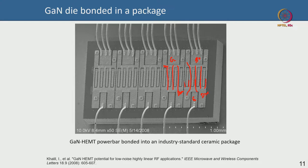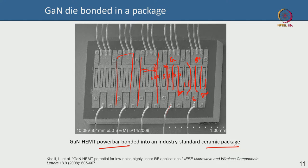This is a power bar — five power cells combined with wire bonding into a ceramic package. There are different package types: QFN, air-cavity, and ceramic packages. This one is in a ceramic package, wire bonded, probably not a very high frequency application. Once you put the GaN die in a package, you can hand it to a designer who can use the provided device characteristics to design an amplifier circuit.